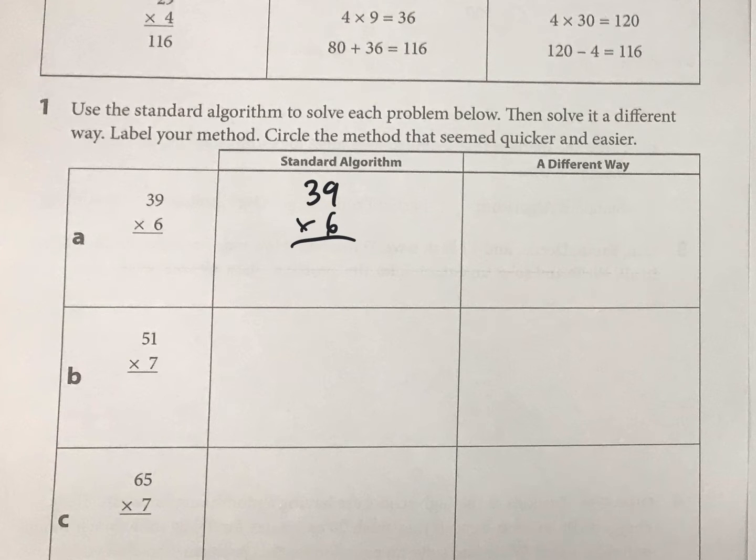So for the standard algorithm here, 9 times 6 is 54, so the 50 comes up here. And then 6 times 30 is 180, right? And then you're adding an additional 50 to that, which is giving you 230, I believe. And there it is.